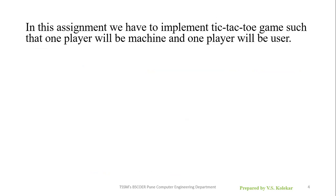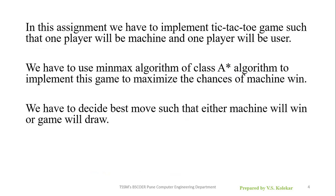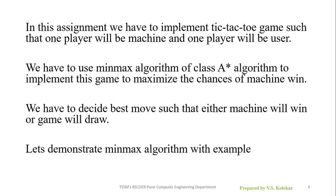In this assignment we have to implement the tic-tac-toe game such that one player will be the machine and one player will be the user. We have to use the min-max algorithm of the class A* to implement this game. We have to decide the best move to maximize the chances of the machine winning, so that the user will never win. Let's demonstrate the min-max algorithm with an example.